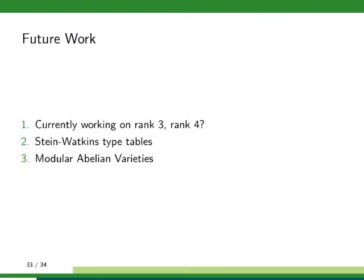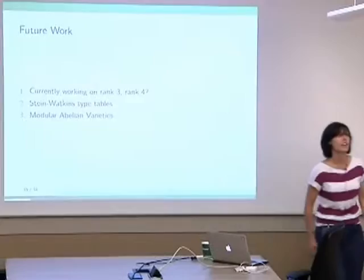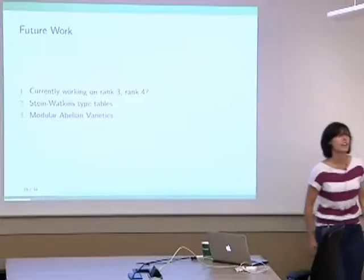Yes, we're assuming modularity and BSD here. For future work: finish and really get going on the Stein-Watkins type tables, and also generalize this to modular abelian varieties, which would be the case where the a_p's aren't all rational. Thank you.